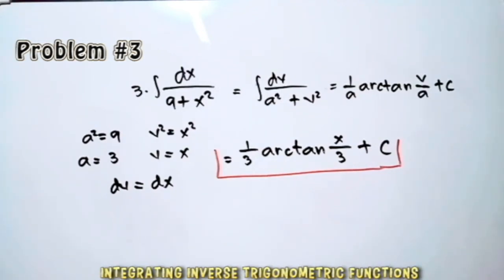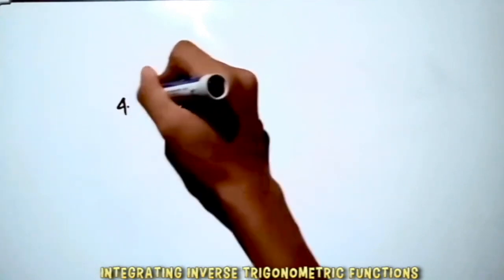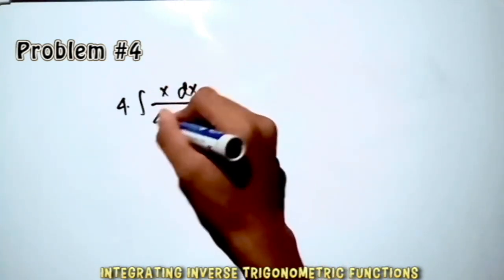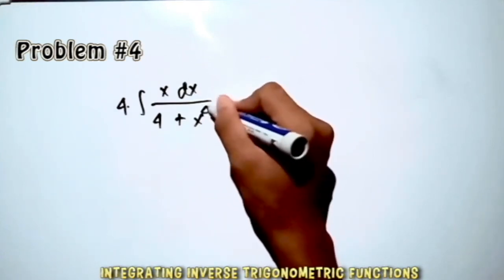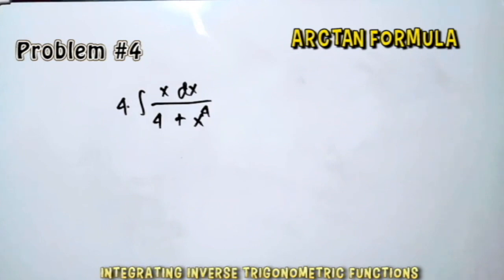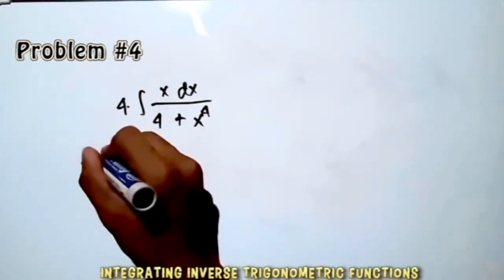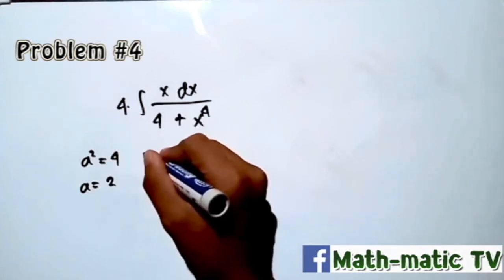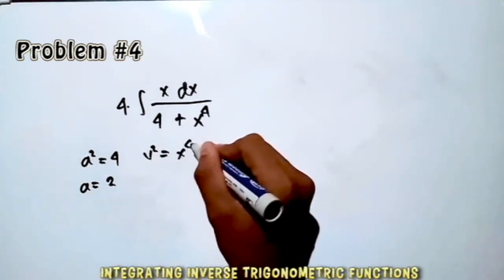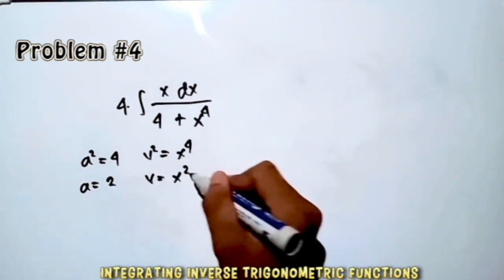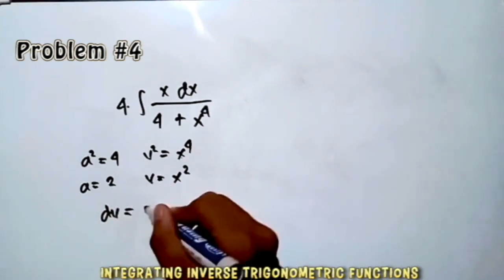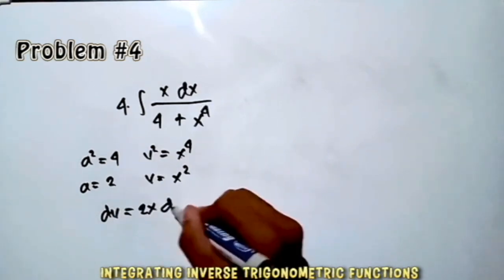Now let's proceed to the last example: integrate x dx over 4 plus x⁴. This looks like the arctan formula. So a² = 4, and a = 2. And v² = x⁴, so v = x². Taking the derivative of both sides, dv = 2x dx.